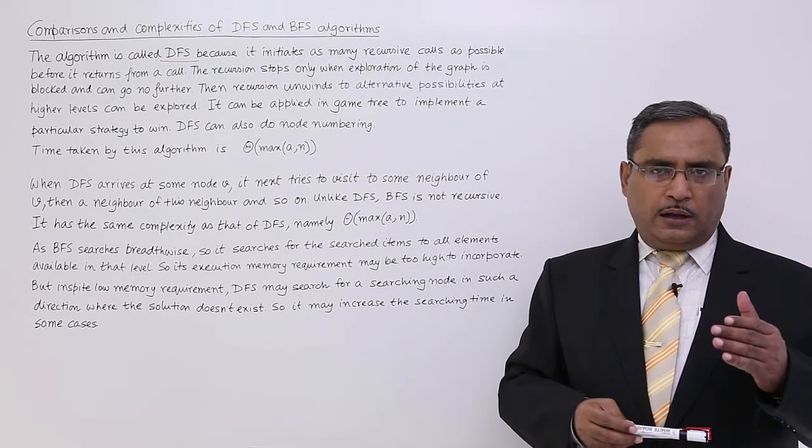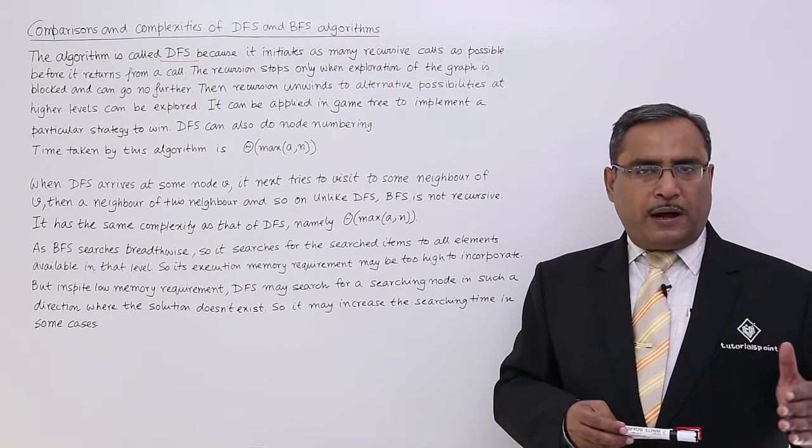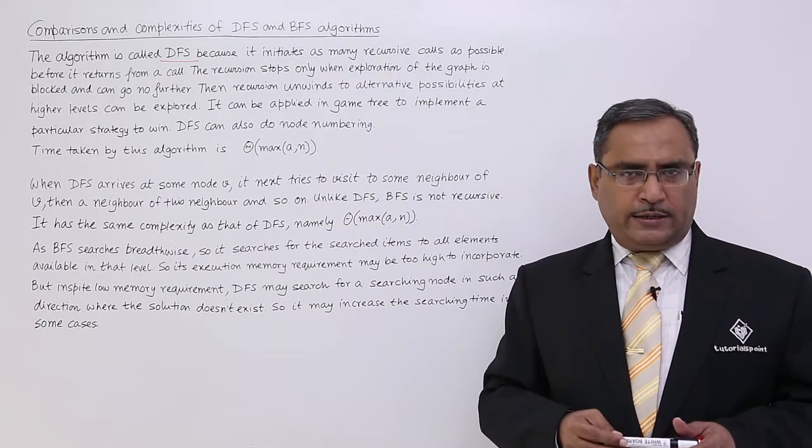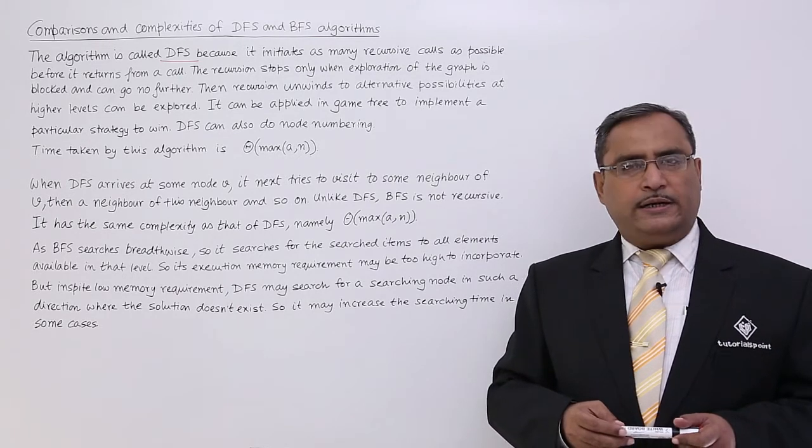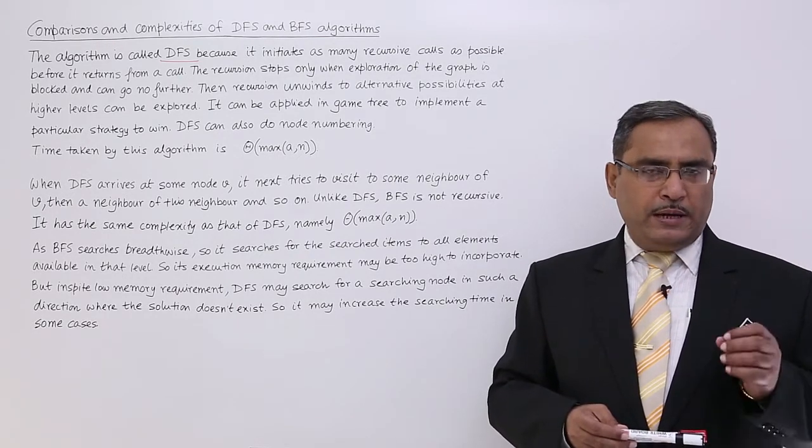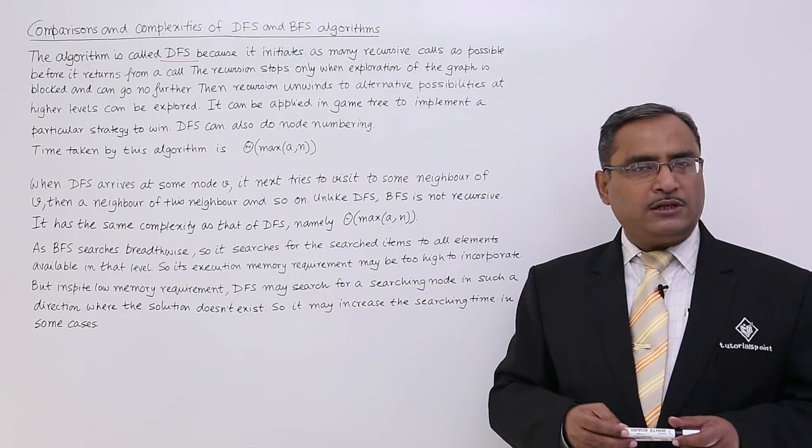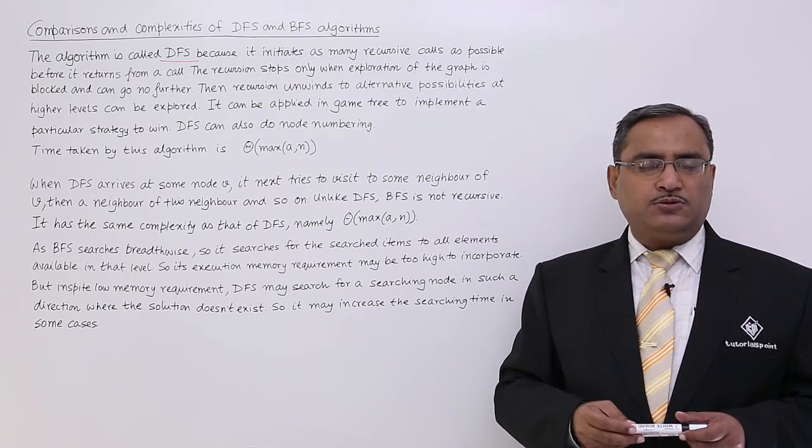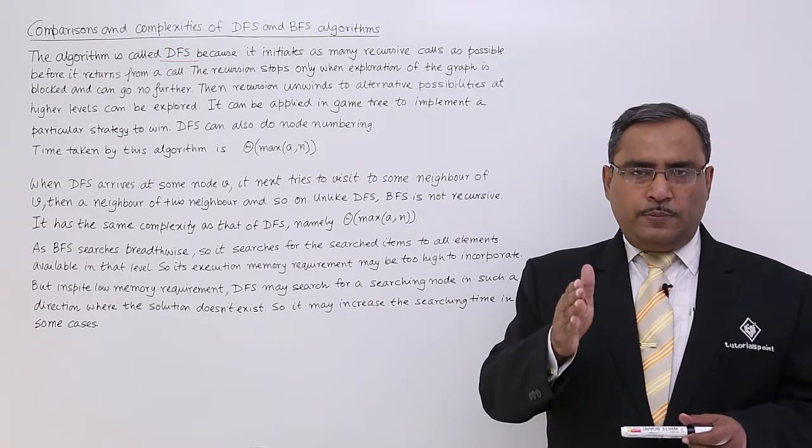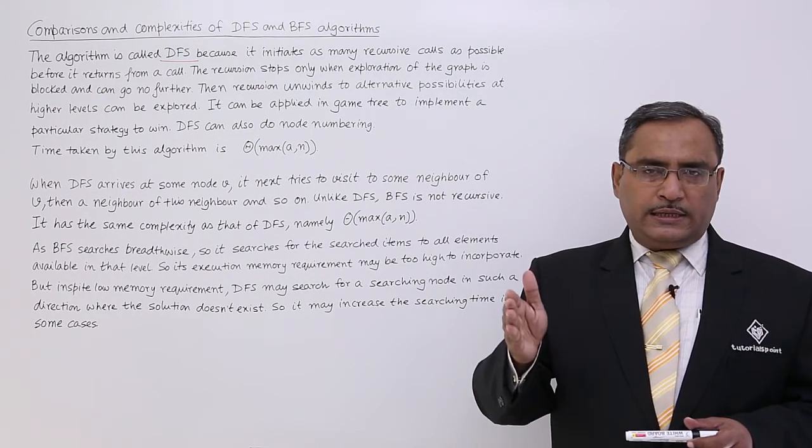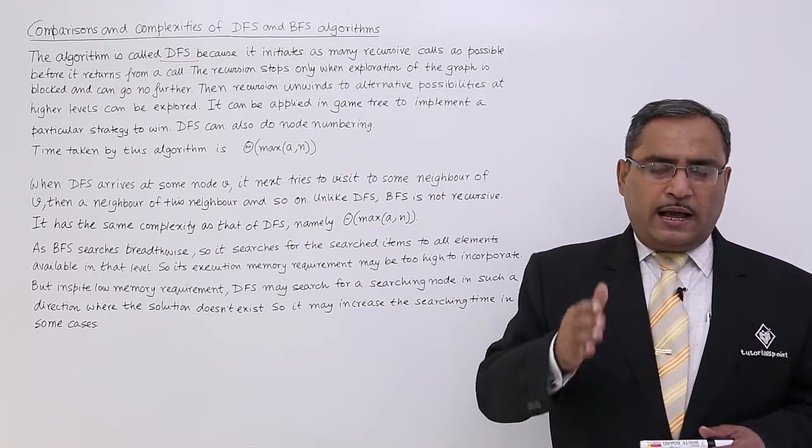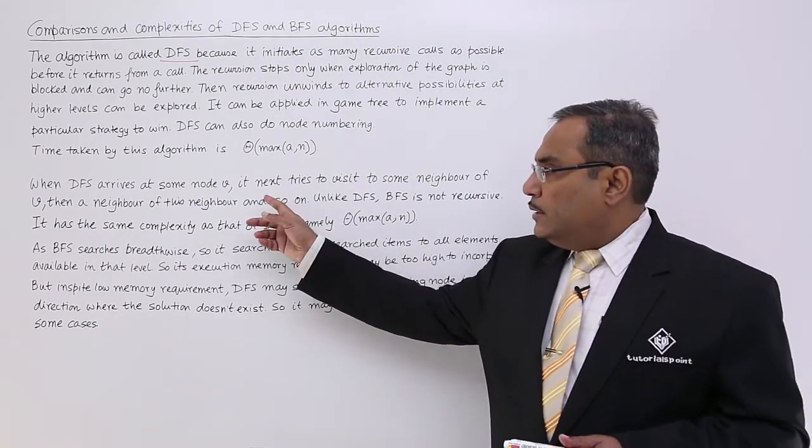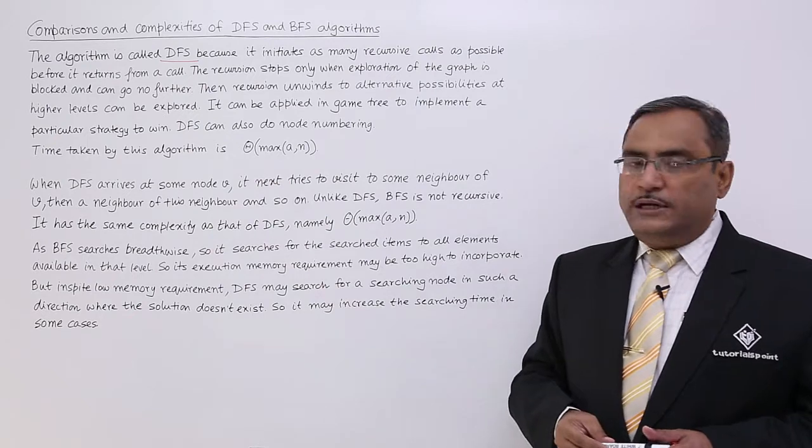We know that if we do not allow any kind of parallel paths, if we do not allow any kind of loops, then for a connected graph, in case of connected simple graph, we will be having minimum number of edges will be N minus 1 and maximum number of edges will be N into N minus 1 whole by 2. So A will be lying in between this N minus 1 and N into N minus 1 whole by 2. That is the complexity for the DFS.